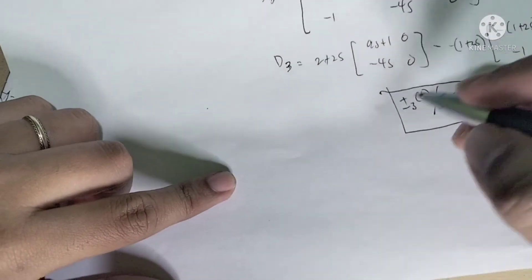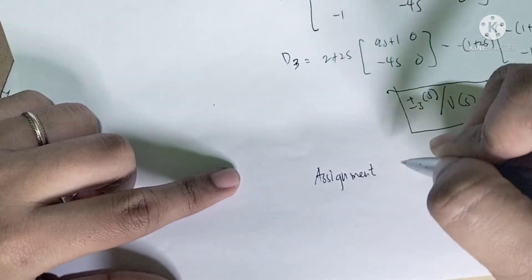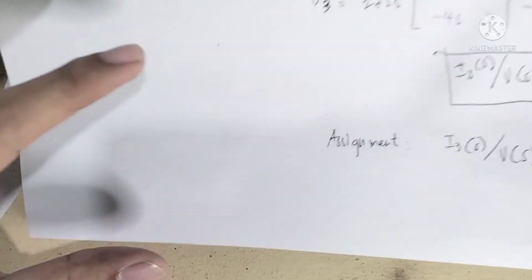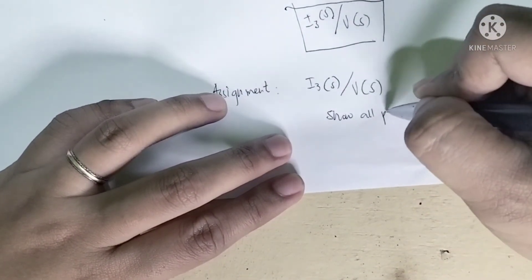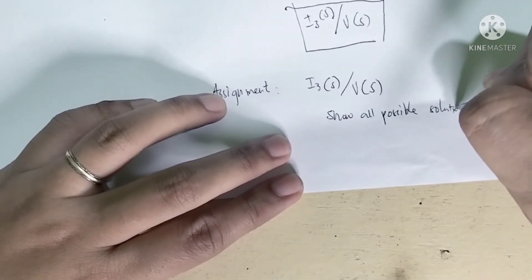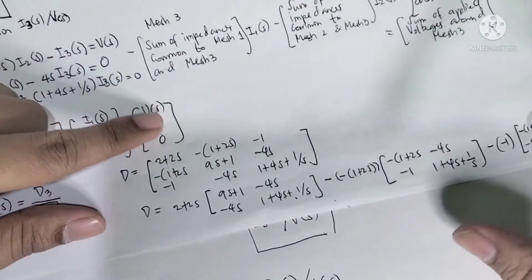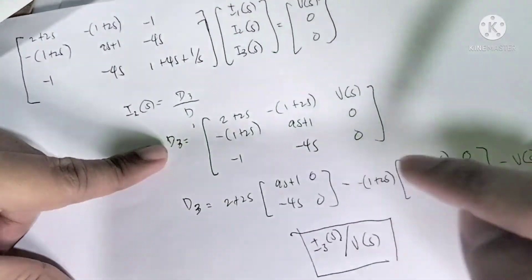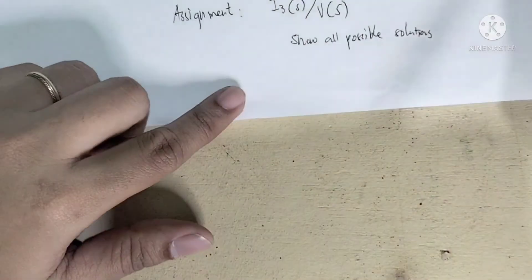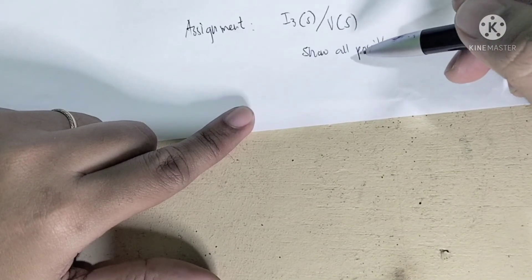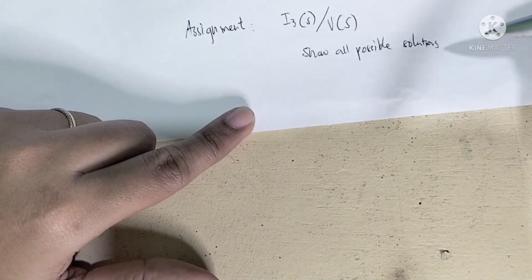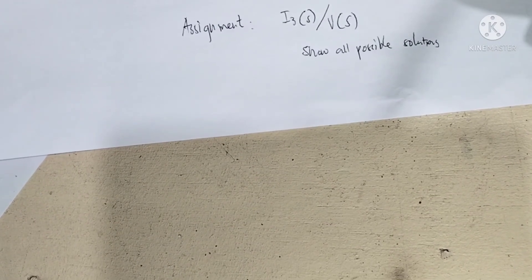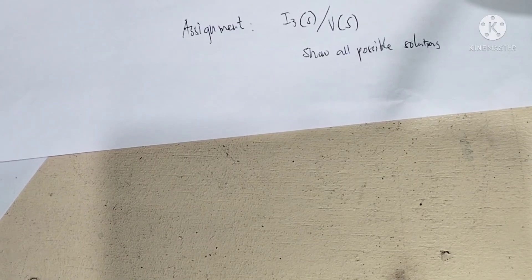For your assignment, you will find I3(s)/V(s), showing all possible solutions for simplifying the expressions, finding the value of D, finding the value of D3, and determining the transfer function of the circuit. Review your algebra, write it on one short paper, and submit it to your assignment module.